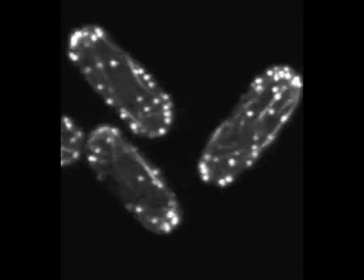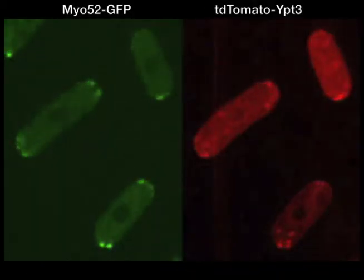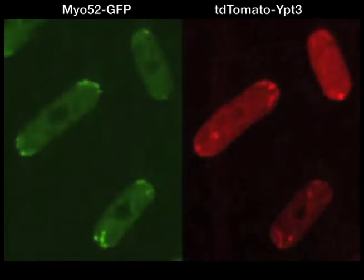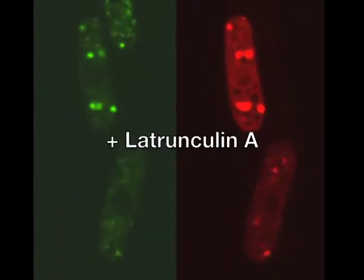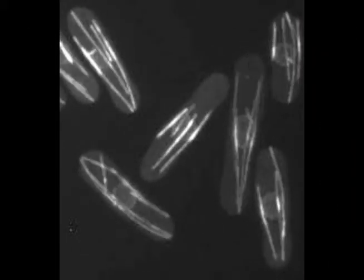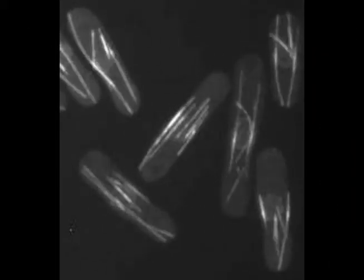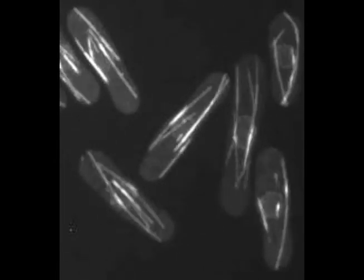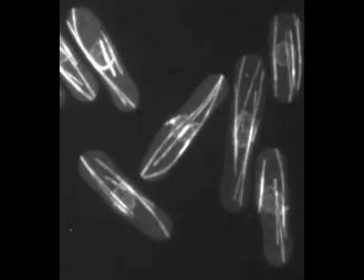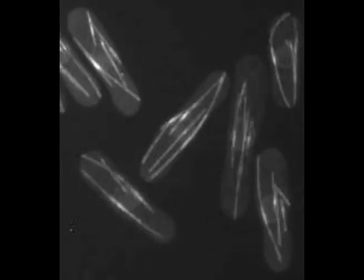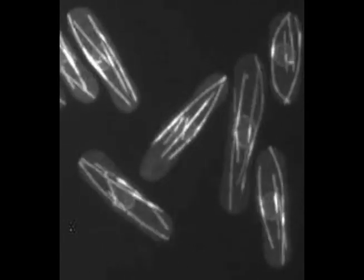One cargo we identified is YPT3, a RAB11 homologue. YPT3 travels along actin cables. Consequently, disruption of actin structures with the drug latrunculin A blocks YPT3 movements and accumulation at cell tips. Microtubules also extend to cell tips but are not essential for polarized growth. The main function for cell polarity is to transport a set of landmarks to cell poles to mark them as sites of growth. Thus, fission yeast cells have two cytoskeletal elements polarized towards the same cellular region.